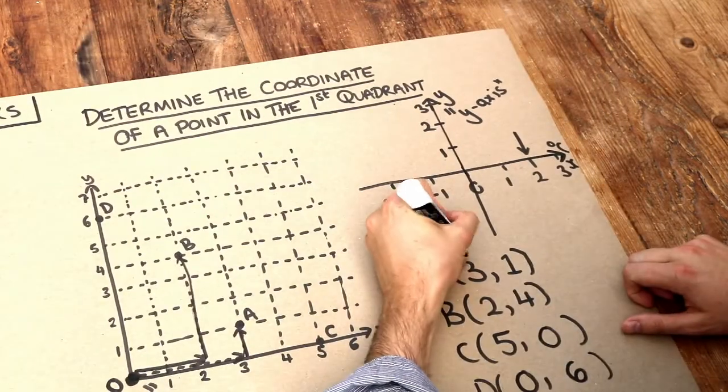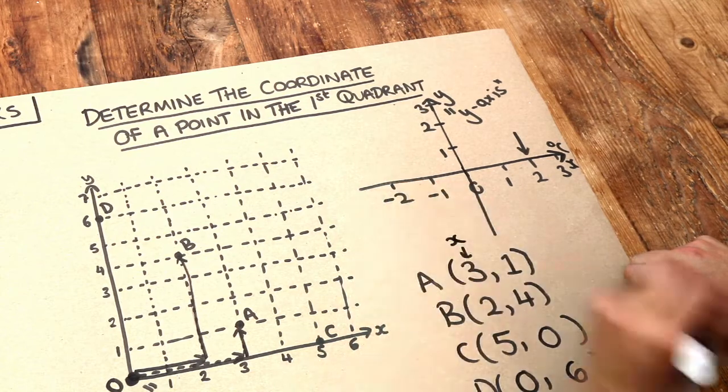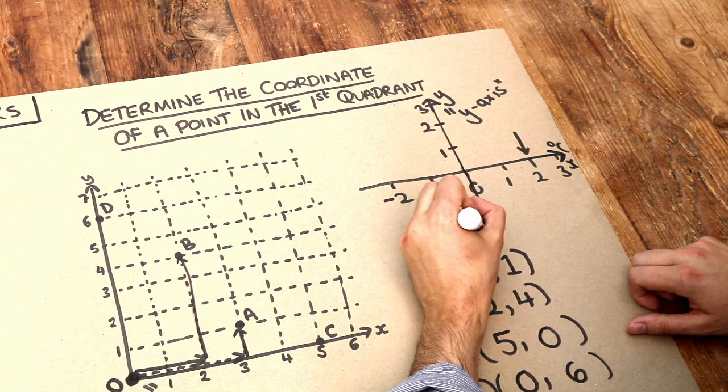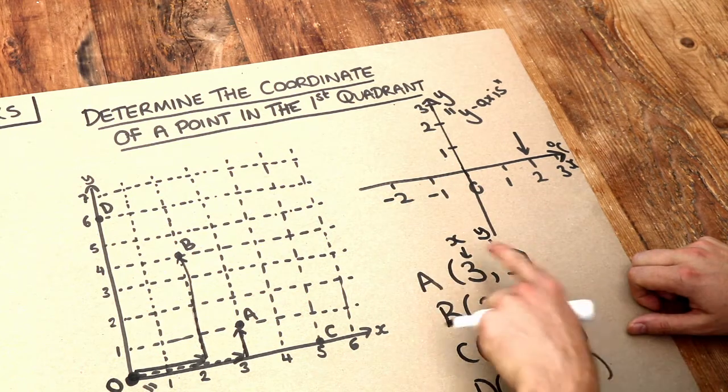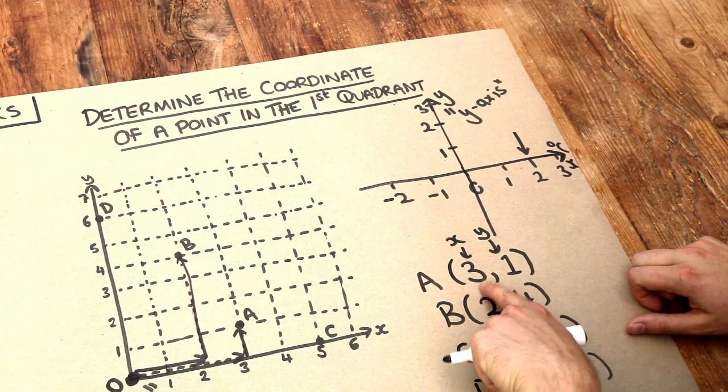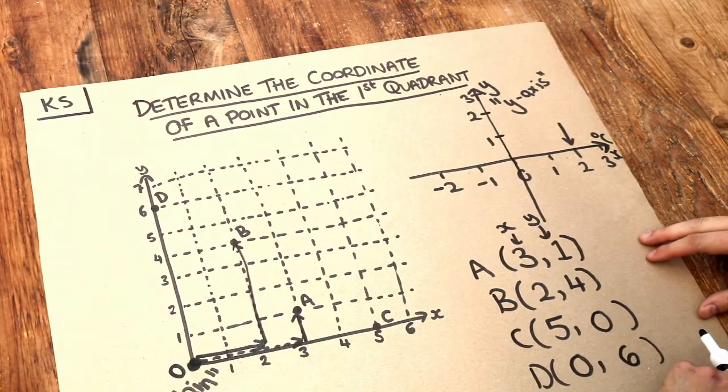So just remember, the first value is how far you are along the x-axis and the second value in the coordinate is how far you are along the y-axis. And remember that x comes alphabetically before y, and therefore your x value should come before your y value.